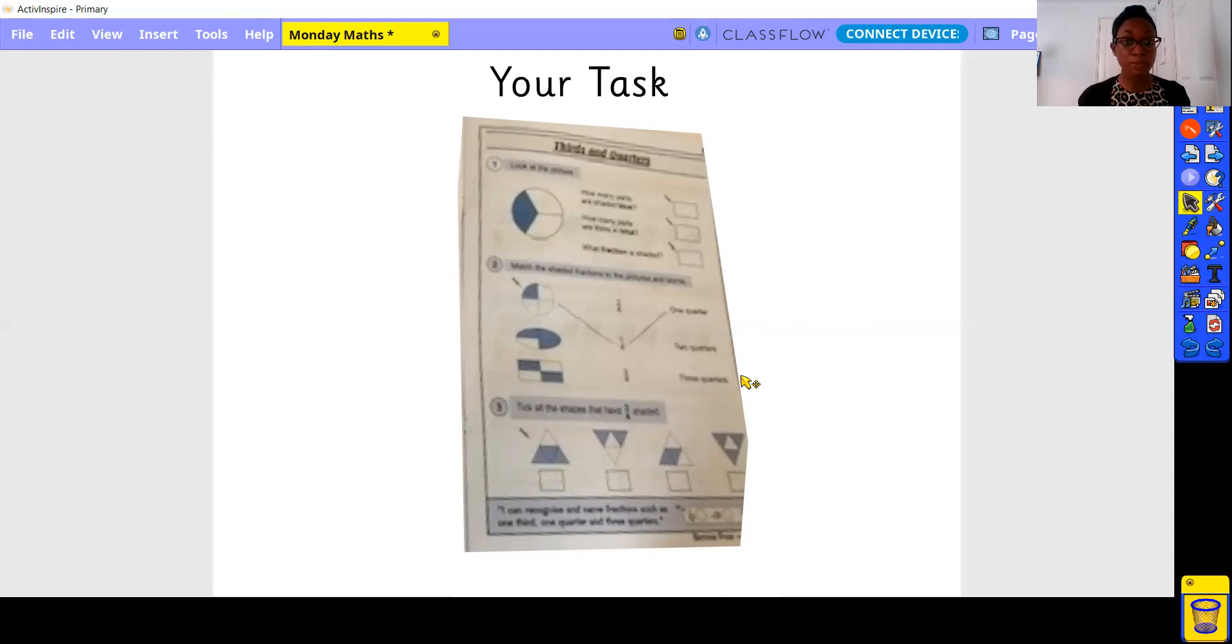Question two. Match the shaded fractions to the pictures and words. First example we can see here, because one part is shaded, three parts remain, but they're four in total. We know this is one quarter. That's it written down. There are the words. So can you do the same for the other two shapes?